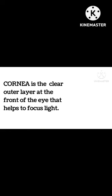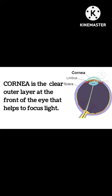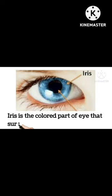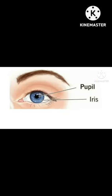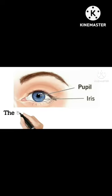The cornea refracts the light entering the eye onto the lens, which then focuses it onto the retina. The iris is the colored part of the eye that surrounds the pupil. It regulates the amount of light that enters the eye.